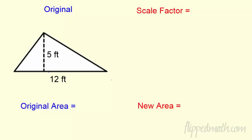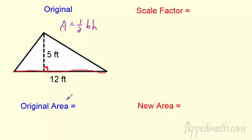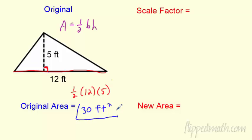Last one — let's do a triangle to make sure we're good with one half base times height. Here's the base and here's the height — notice it makes a 90-degree angle, shown by that little box. We go one half times base times height: one half times 12 times five. Half of 12 is six, and six times five is 30. So the area is 30 feet squared.